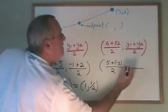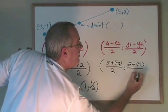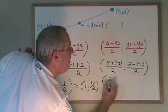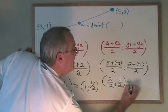If y1 is 2, we put the 2 here, and y2 will be the negative 1. Simplifying, we end up with 2 over 2, and 1 over 2, we get the same answer.